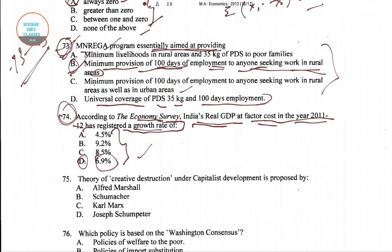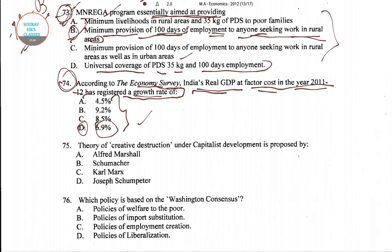Question number 75 asks: the theory of creative destruction under capitalist development was proposed by whom — four options are given. The answer is Joseph Schumpeter. He propounded the theory of creative destruction under capitalist development.